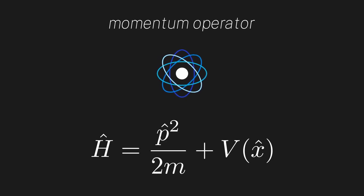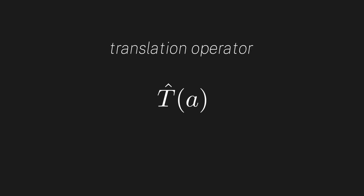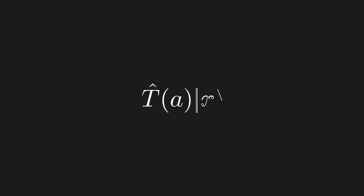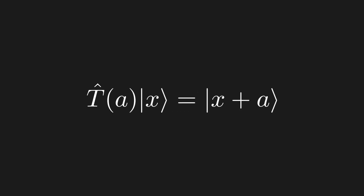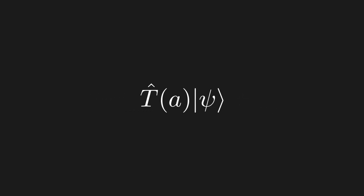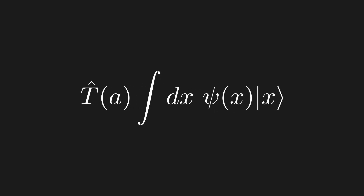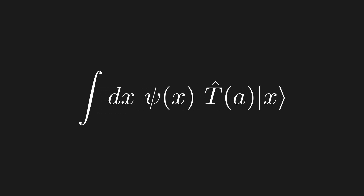To start, let's begin like we did last episode but instead of looking at the time evolution operator we now want to analyze the translation operator. What does the translation operator do? Well, when acting on a position eigenstate it simply translates it to the position eigenstate corresponding to x plus a. Given this definition, it's pretty easy to see how the translation operator acts on an arbitrary quantum state — we can always expand the quantum state in the position basis, then move the translation operator in and act it on the ket, which will just translate them all over by a.